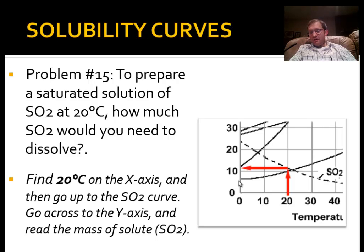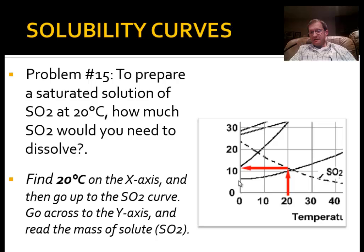For any of these problems, go to the temperature the question asks, go up until you bump into the curve for the solute in question, then go straight across to the left and read that amount off the y-axis. Solubilities are in grams and temperatures are in Celsius. The temperatures on this chart range from 0 to 100 degrees Celsius because water exists as a liquid in that range. Anything colder and you'd be dissolving into ice, which doesn't work well.